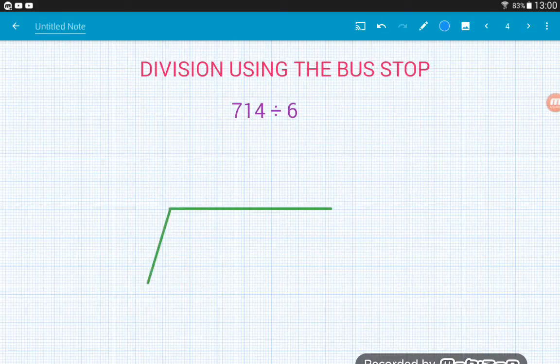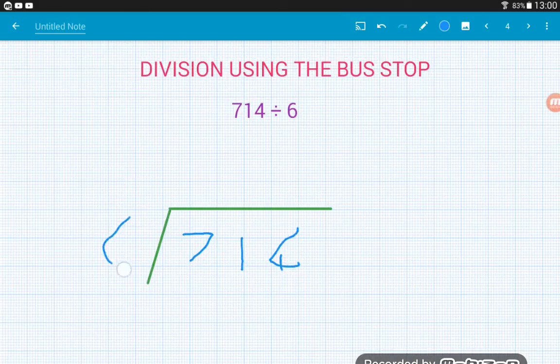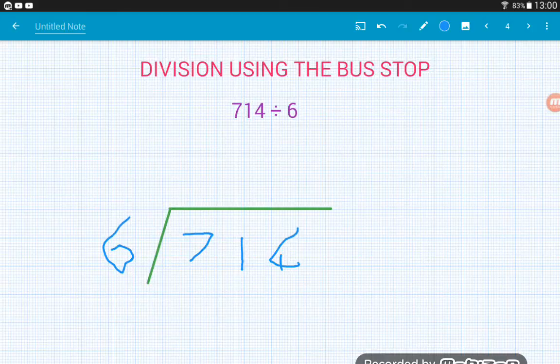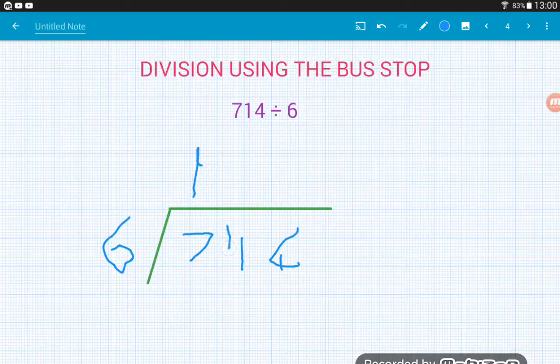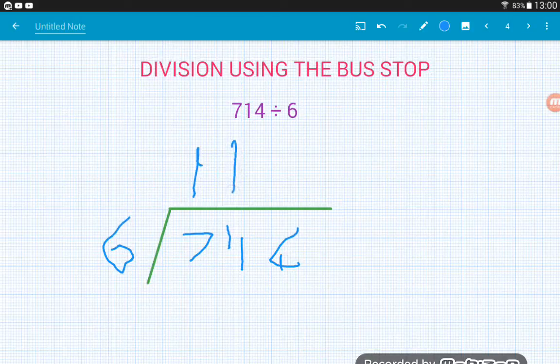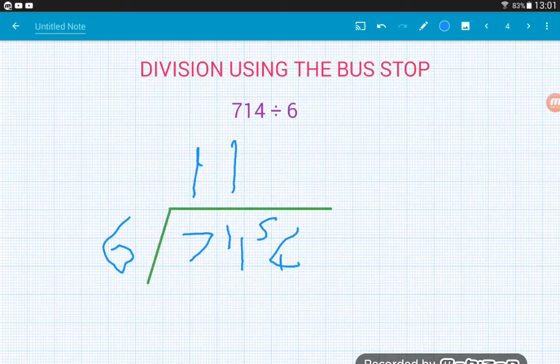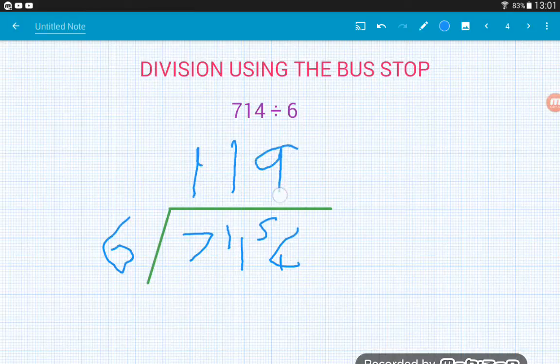714 divided by 6. So 714 under the sign, 6 on the outside. 6 into 7 goes once. 7 take away 6 is 1, we've got a remainder of 1. 6 into 11 goes once. Now 11 take away 6 is 5, so here we've got a remainder of 5. Carry a 5 over to the 4. How many sixes are in 54? It's 9.